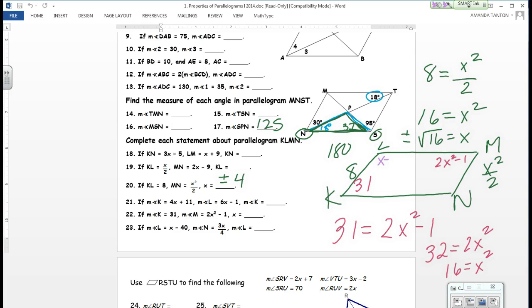23. L is x minus 40 and N is 3x over 4. What are we going to do with them, Josh? We have what? L is x minus 40 and N is 3x over 4. Set them equal because they're opposite.